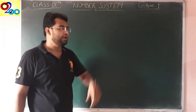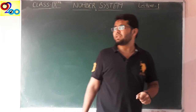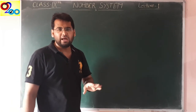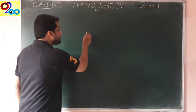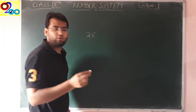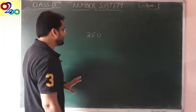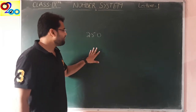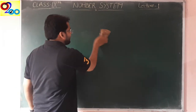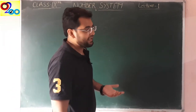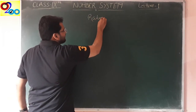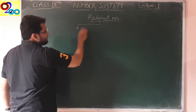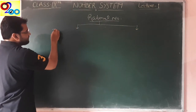Now we further categorize rational numbers. We know that any number in the world, when simplified, comes in decimal form. Any fraction when divided gives a decimal number. Even 25 is also a decimal number — as 25.0. Any number, whether integer, decimal, or fraction, can be written in decimal form. On this basis, we have categorized rational numbers into two parts.